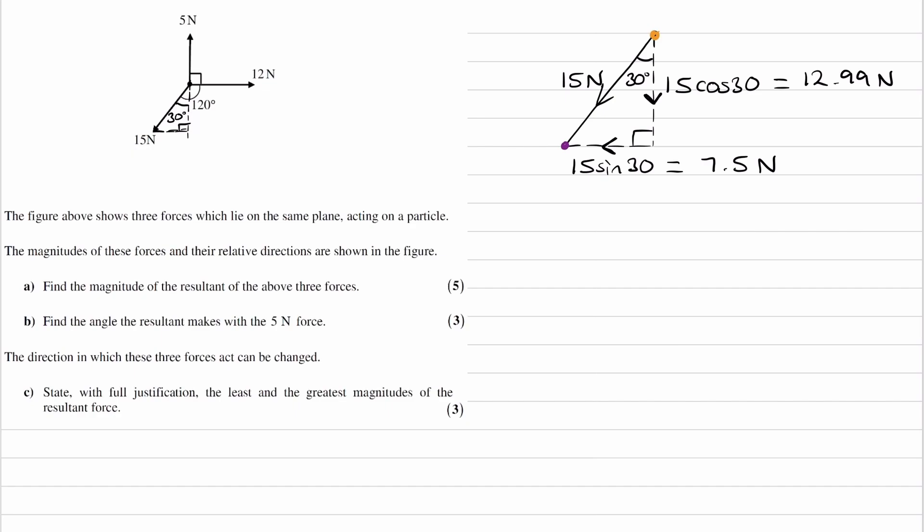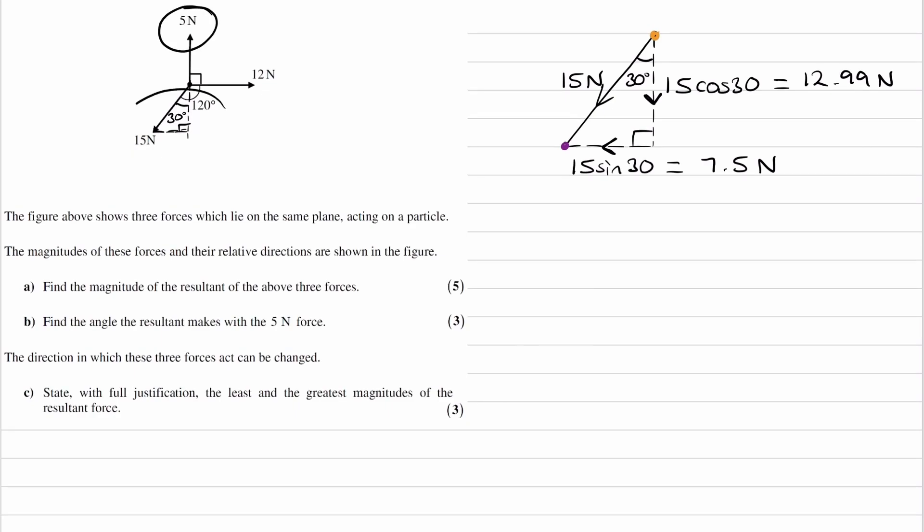So then we can work out what the overall vertical force is. We have 5 Newtons upwards, and now we've figured out from this triangle here that the overall downwards force is 12.99. So if we take the two things away, we find out that we have 7.99 Newtons of force acting downwards. So that's the overall downwards force.